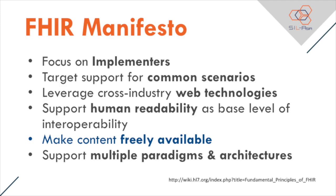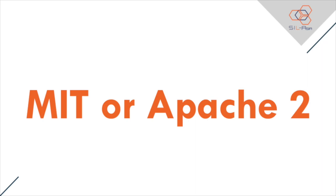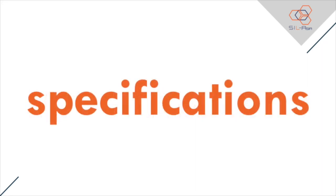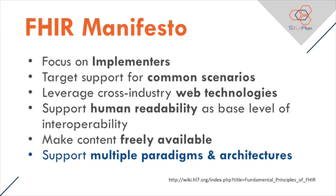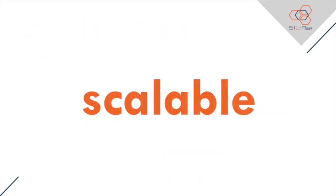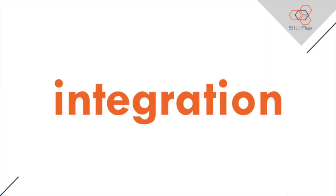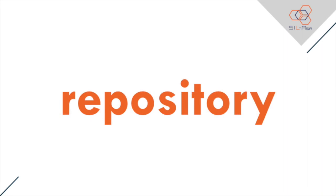Make content freely available: FHIR itself is licensed under the Creative Commons No Rights Reserved License, or CC0. FHIR tutorial materials are generally also under the CC0. The software is generally MIT or Apache 2.0. The specification is also free for use with no restrictions. Support multiple paradigms and architectures: the standard should be scalable as the health data is. FHIR does not impose a specific use model and can be adapted to different architectures. It can be used as a lightweight application on mobile devices or wearables, as an integration component to existing systems, or as a central data repository.